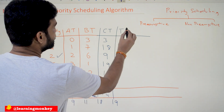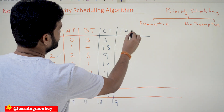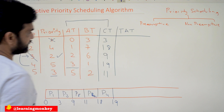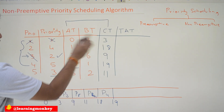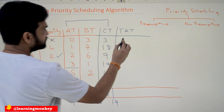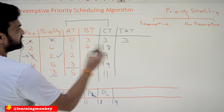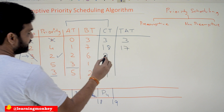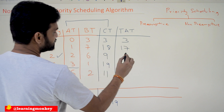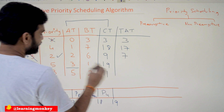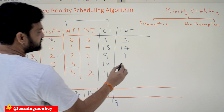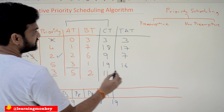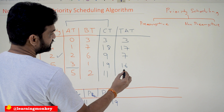What about turnaround time? Turnaround time is completion time minus arrival time. So for P1: 3 minus 0 = 3. For P2: 18 minus 1 = 17. For P3: 9 minus 2 = 7. For P4: 19 minus 3 = 16. For P5: 11 minus 5 = 6.